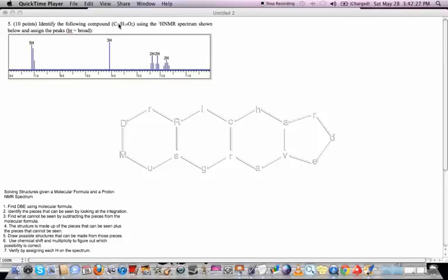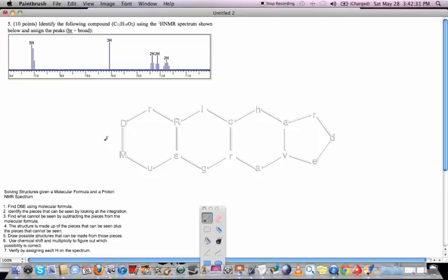Alright, so the first thing we want to do is look at the molecular formula and figure out how many double-bond equivalents we have. C11, H14, O2. The oxygen is not going to play into the formula here.